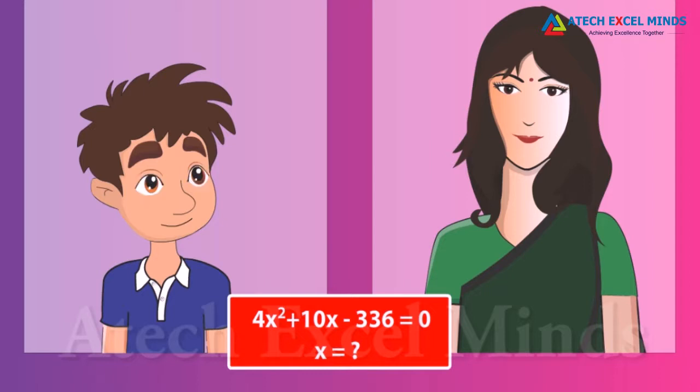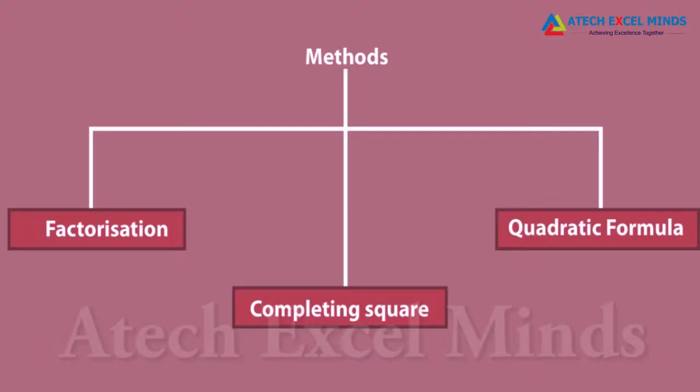To find the present ages of Anmay and his mom, we need to find the value of x, and hence we need to solve the quadratic equation. This quadratic equation can be solved by three methods: factorization, completing the square, and by the quadratic formula.